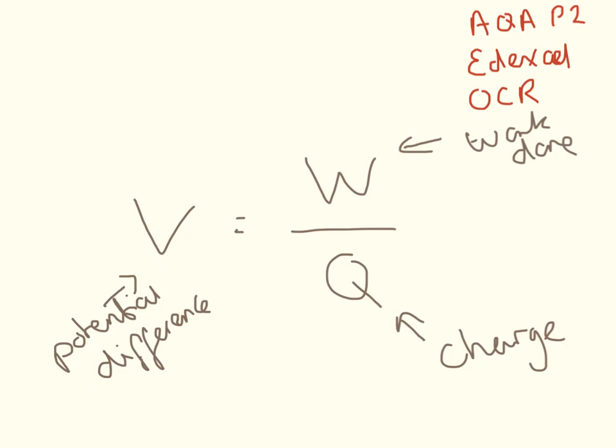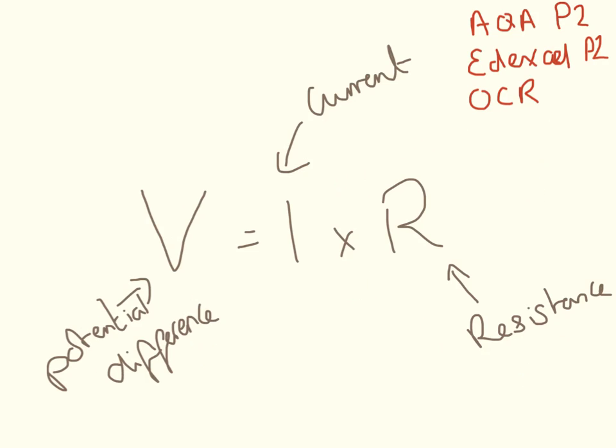Here, the potential difference is in volts. This is the work done, and that is in joules. And our charge is in coulombs. Here again, our potential difference is in volts. Our current is in amps. And the resistance is in ohms.